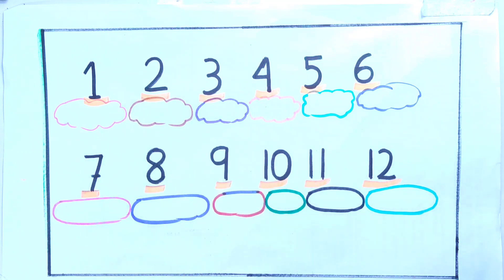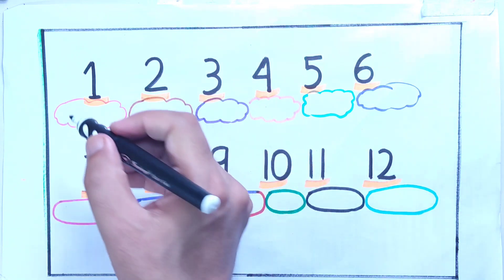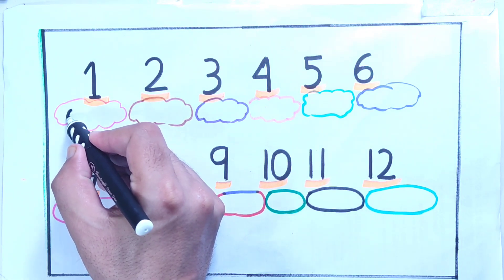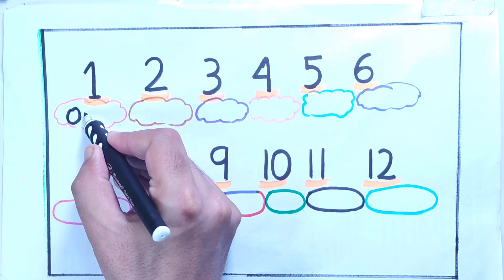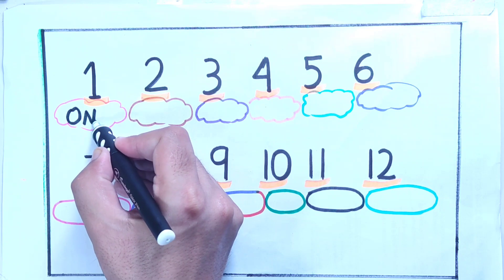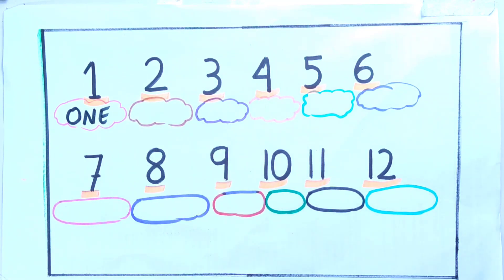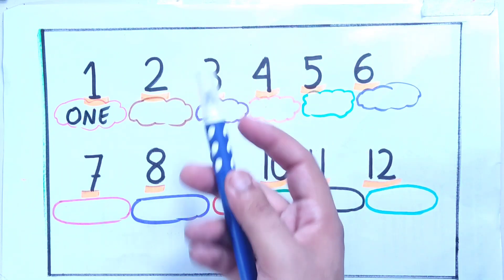So let's start. Here is number one. The spelling of one is O-N-E, one.